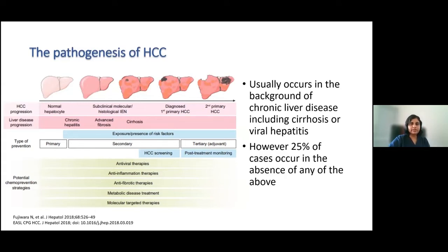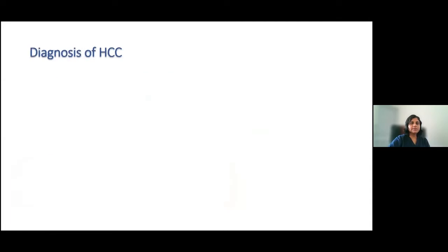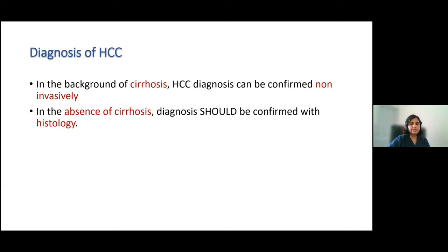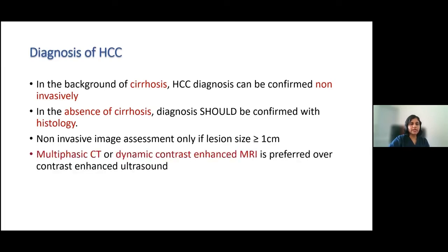It is important to note that 25 percent of cases occur in the absence of chronic liver disease. Regarding diagnosis of hepatocellular carcinoma in the background of cirrhosis, HCC can be safely confirmed non-invasively by imaging. However, in the absence of cirrhosis the diagnosis should be confirmed with histology. Non-invasive image assessment is only useful if the lesion size is more than one centimeter, and multiphasic CT or dynamic contrast MRI are the preferred imaging modalities, preferred over contrast-enhanced ultrasound.